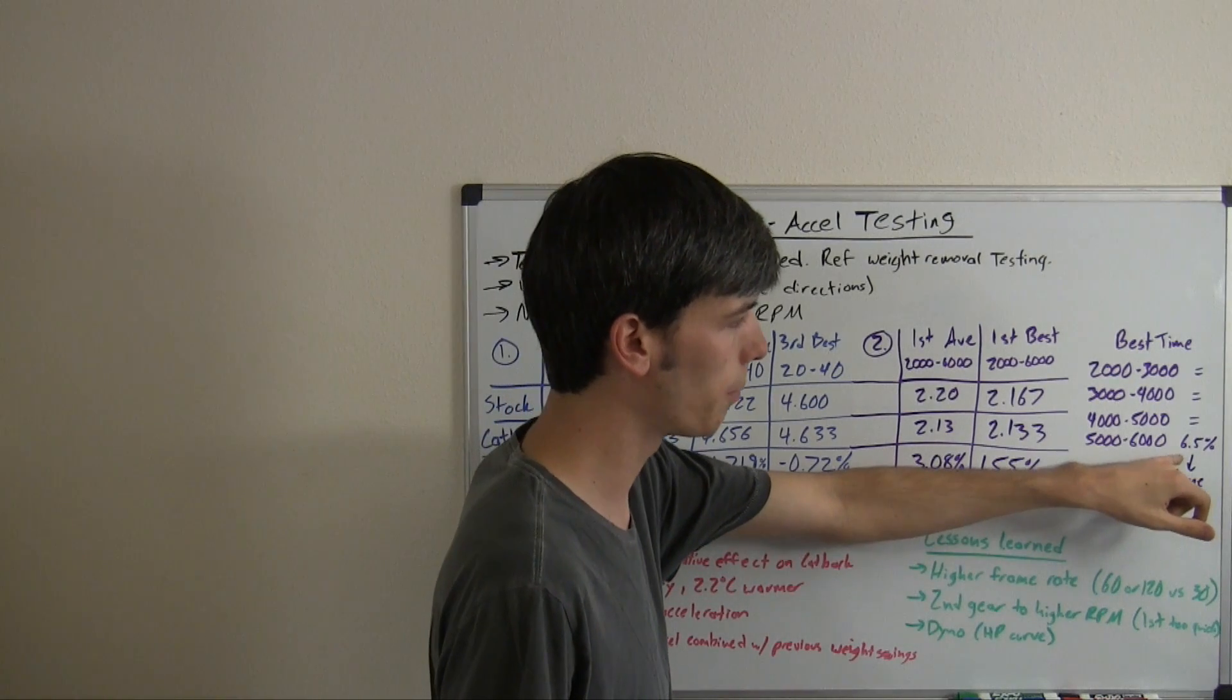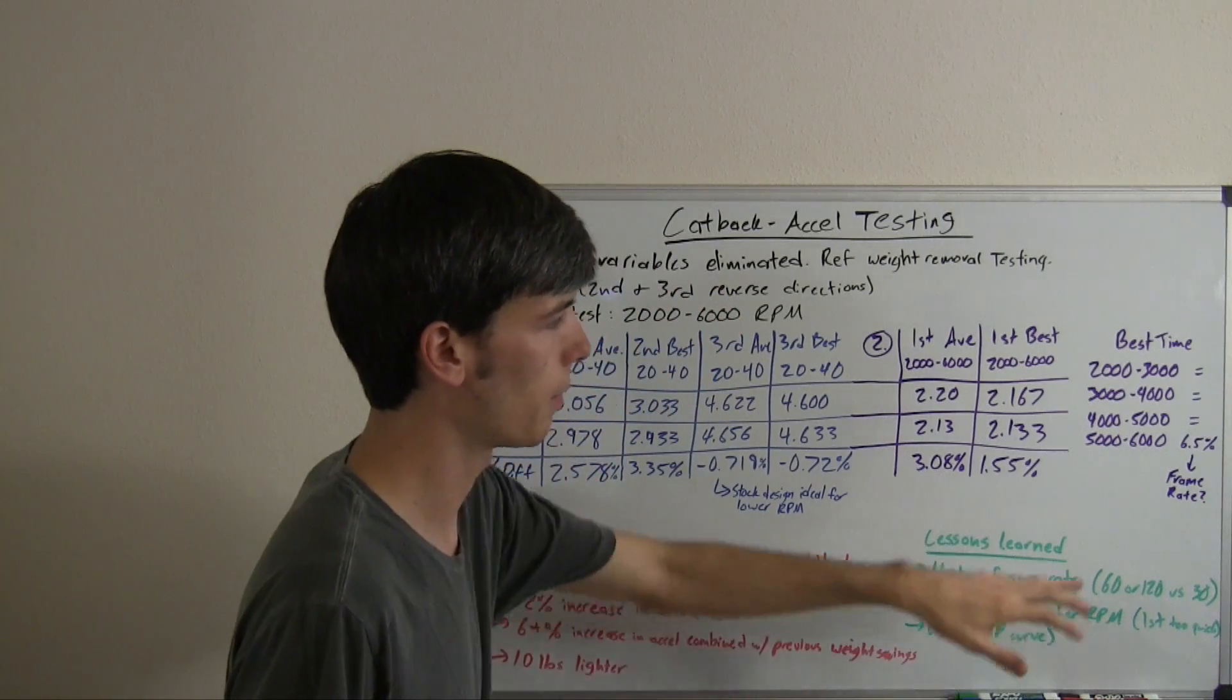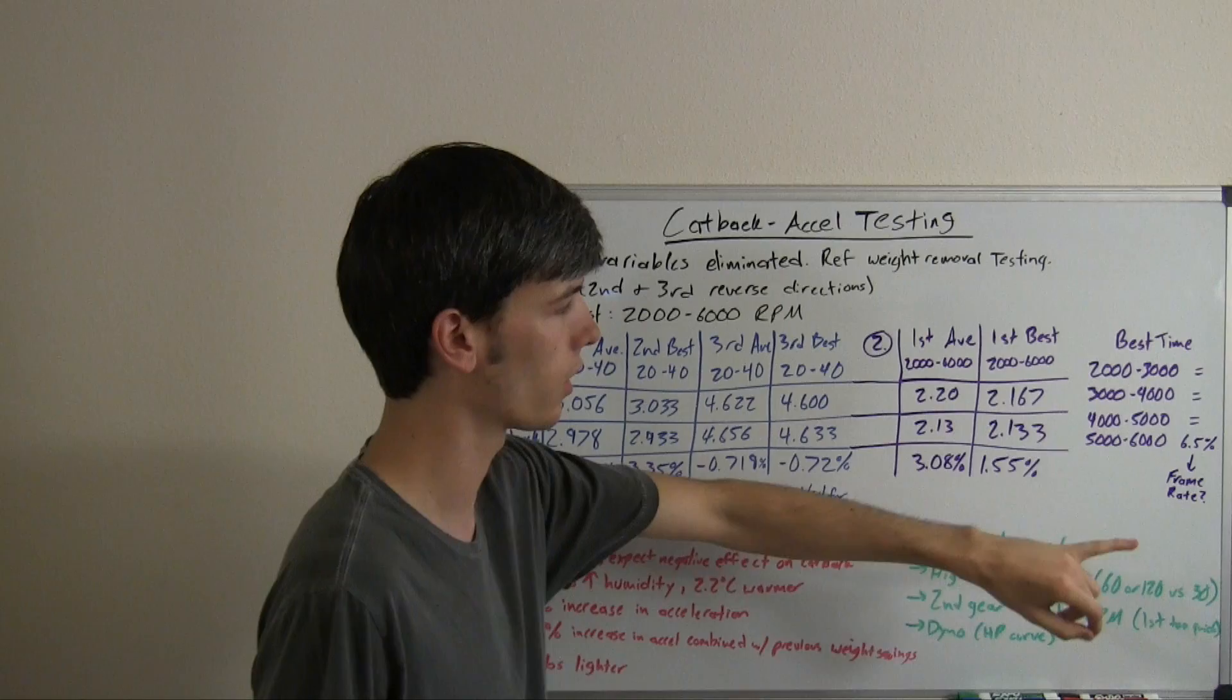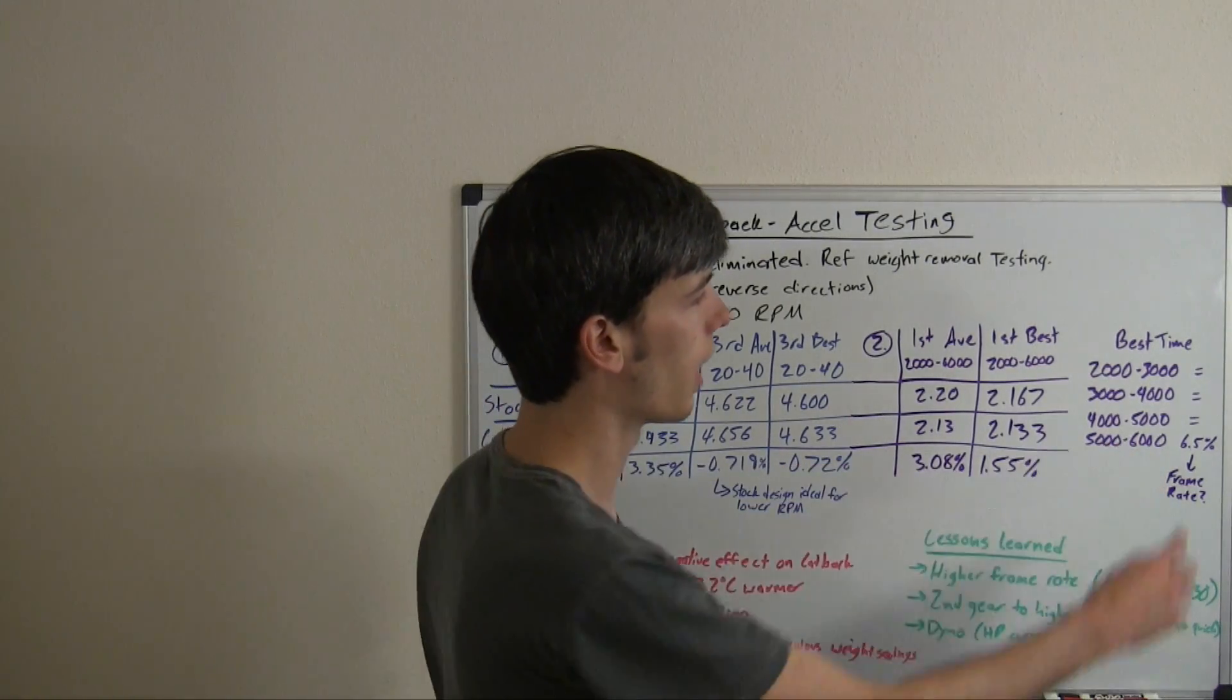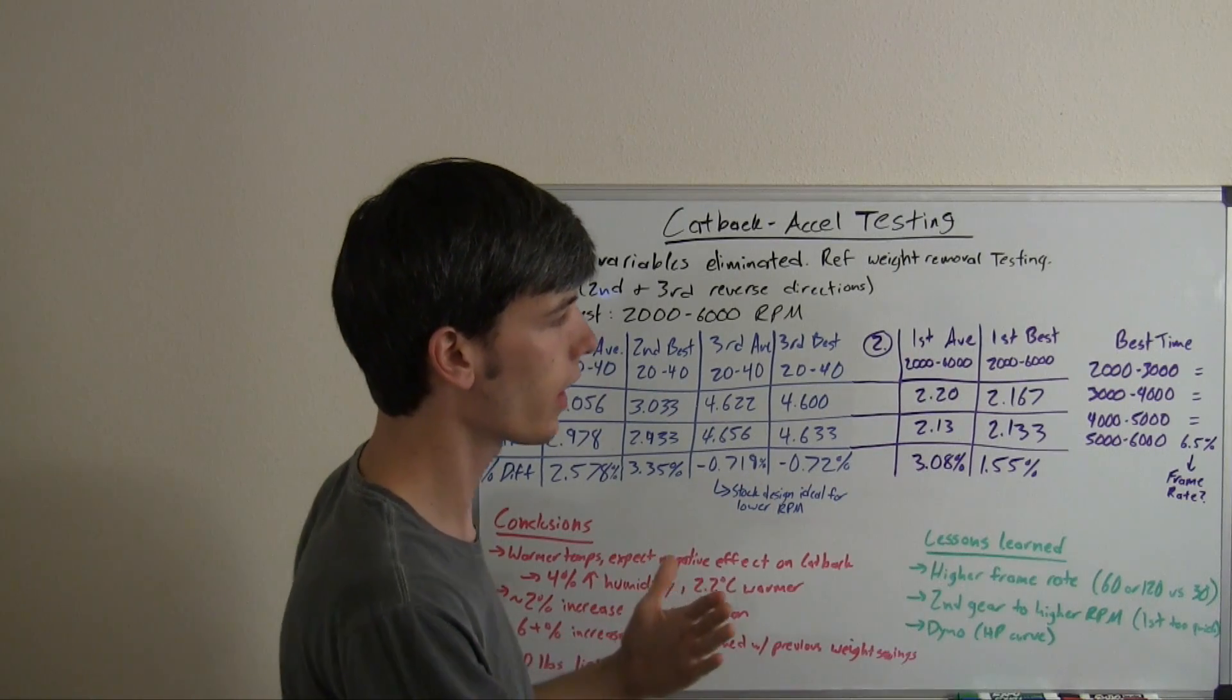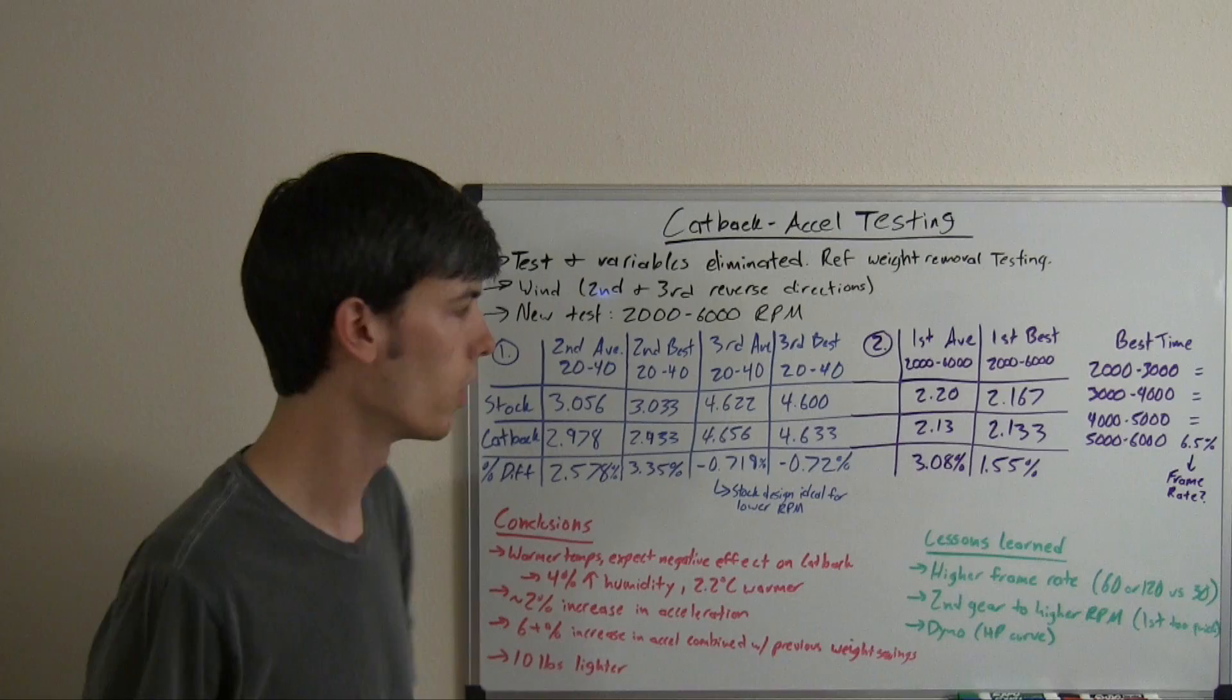A big increase in the acceleration at the very end in these higher RPMs when you've got a lot of exhaust flowing through that cat-back. Now this is a bit high. I don't really expect the actual improvement to be 6.5%. My frame rate was fairly low, only 30 frames per second, so that's definitely something I need to tweak in the future. But it basically tells you that both exhausts are fairly equal, then you get into this higher RPM range and you start to take advantage of that higher flow exhaust.